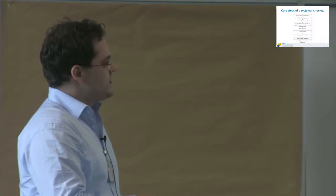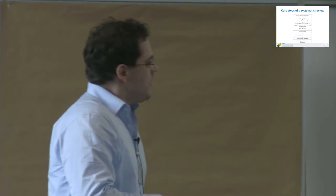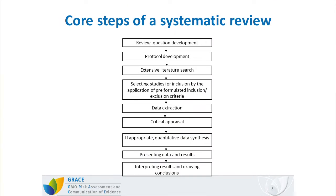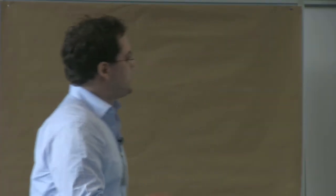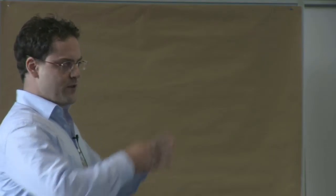Within this step, the tendency of an included study to be prone to a systematic error that may influence the reliability of the presented results is determined. Following the critical appraisal step, a data synthesis step is performed — for example by quantitative meta-analysis. The last two steps are about presenting the data, interpreting them, and drawing conclusions. I now want to take you through the major core steps of a systematic review to familiarize you with this overall concept.